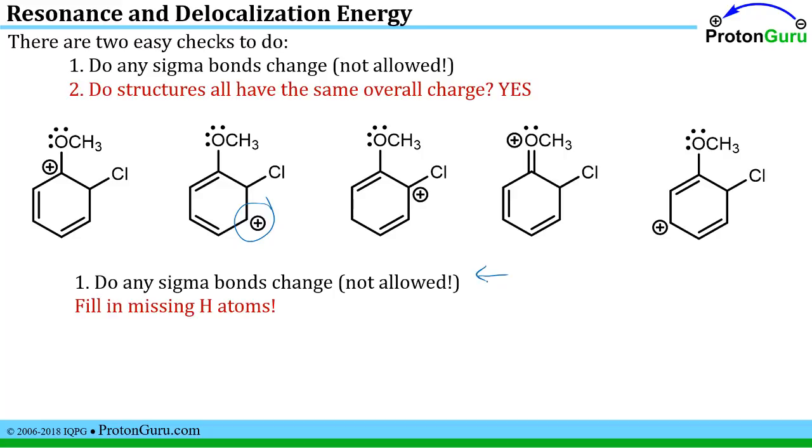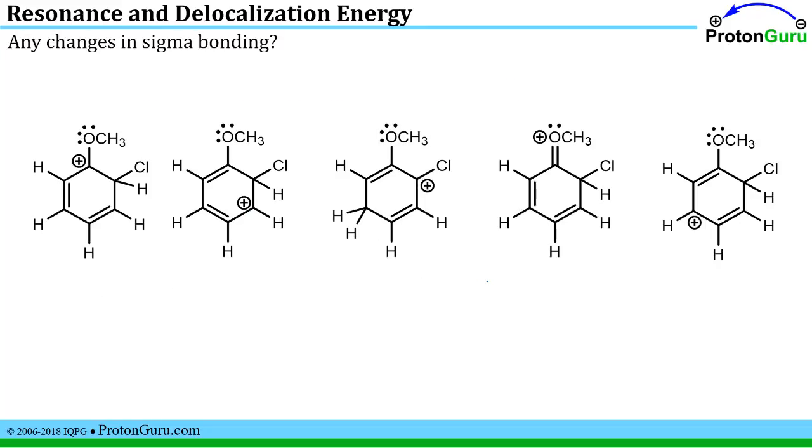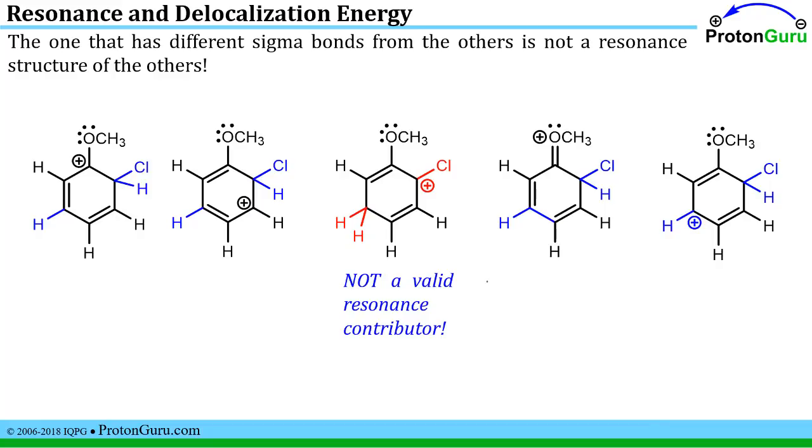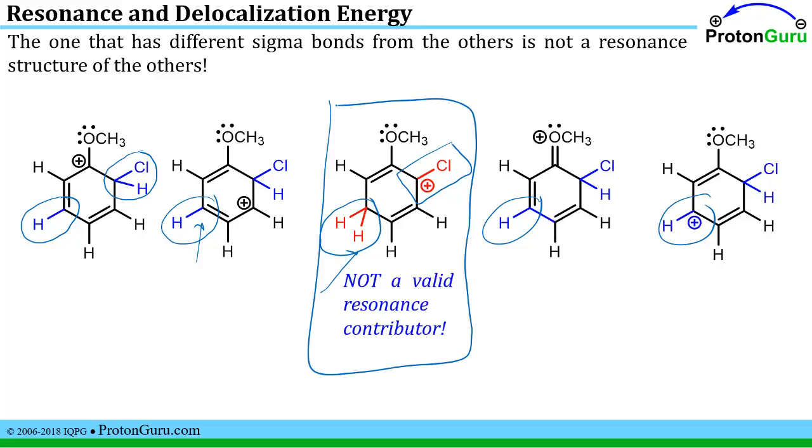Now I have to check to see if I have any sigma bond changes which are not allowed in resonance contributors to the same structure. So we've got to fill in the missing hydrogen atoms again. If we do that, you should take a look at these structures and see if you can assess and find any changes in sigma bonding. Well, all of these structures have a chlorine and a hydrogen on this carbon except for this one. You also have only one hydrogen in all these structures except for, again, this structure. Because you've got a change in sigma bonding, this structure is not a valid resonance contributor to the same structure represented by the other contributors.